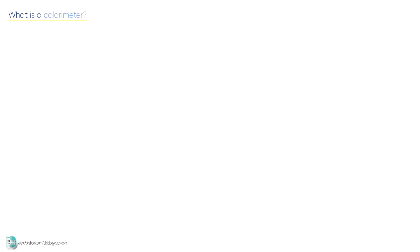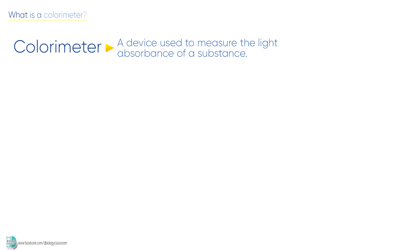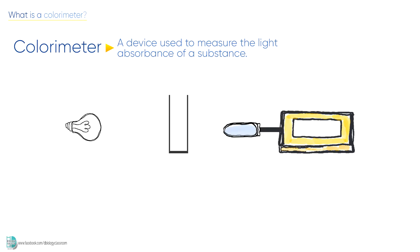A colorimeter is a device used to measure the light absorbance of a substance. This is a simple diagram showing you how a colorimeter works.